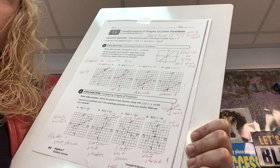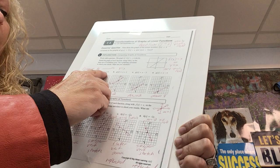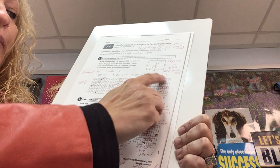Hopefully you've already made a conclusion: comparing to the parent graph, if you have a number added, it's going to move the graph up. If you have a number subtracted, it's going to move the graph down.